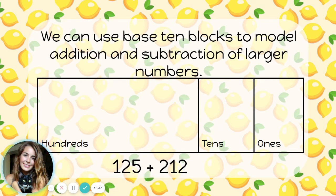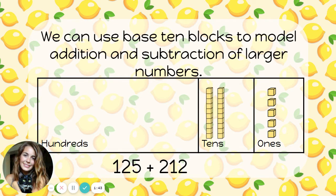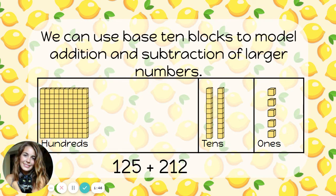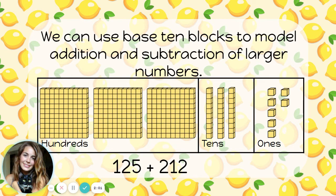125 has five ones, so I'll put five ones blocks. It has two tens and one group of a hundred. That's the number 125. Now I'm going to add my second number, 212. I need to add two more ones, one more ten, and two more hundreds. Now what I have is my answer. I started with 125, I added 212 more, and now I have seven ones, three tens, and three hundreds. That's the answer 337.